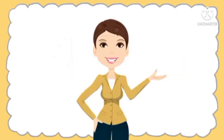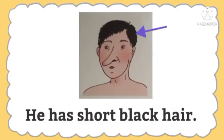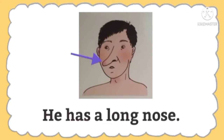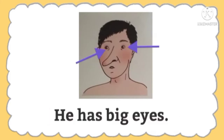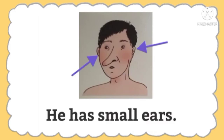So now let's have our review. Are you ready? Great! So let's begin. What does he have? Very good. He has short black hair. He has a long nose. He has big eyes. He has a small mouth. He has small ears.